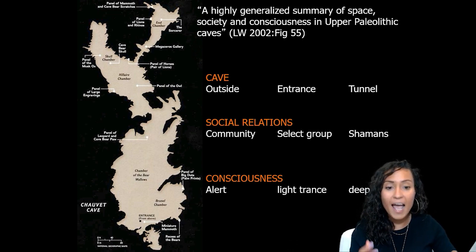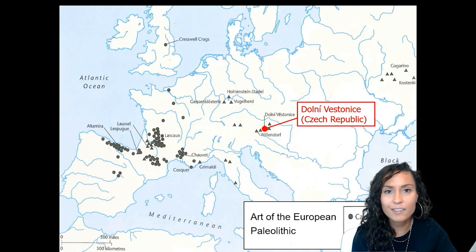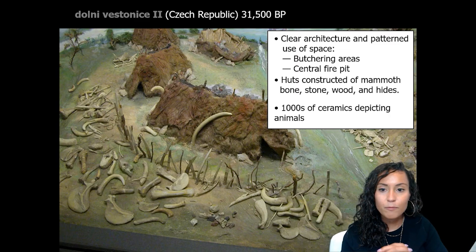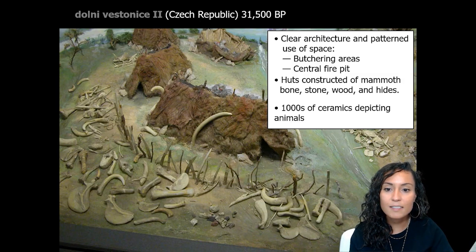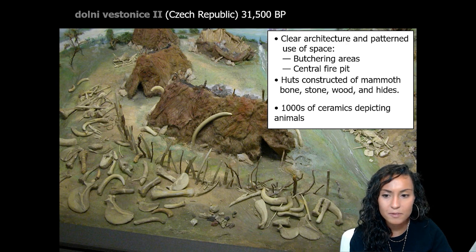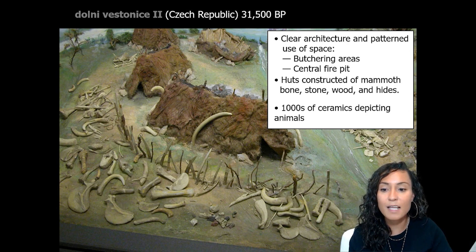Is there any evidence that social hierarchies were actually beginning to emerge at this time? Some preliminary evidence comes from Donne Vestancic, a cave site in the Czech Republic. This campsite overlooks the Dye River Valley and dates to about 25,000 years ago, with roughly 100 people occupying it at its height. Notable findings include a large number of burnt clay figures fired in small oval-shaped ovens, thousands of ceramics depicting animals — the world's earliest evidence for fired clay — as well as traces of basketry and textiles, the earliest examples of fiber technologies in the world.